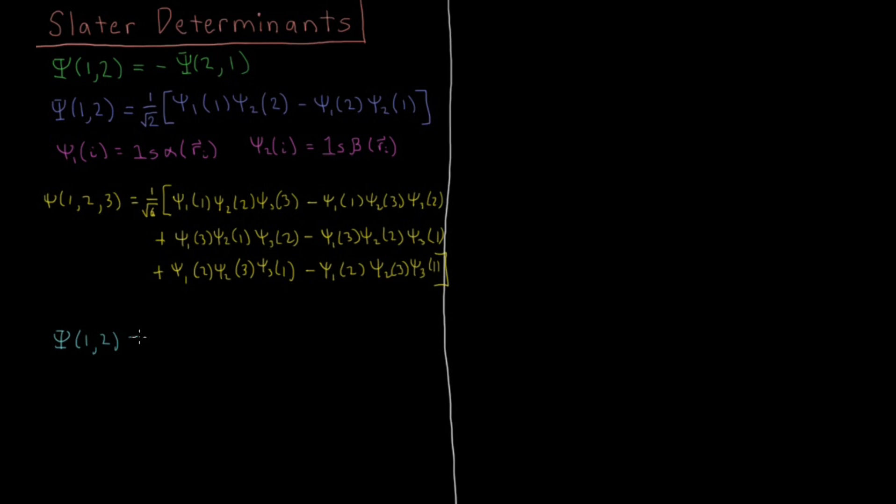For our two-electron case, this type of product here is equivalent to saying 1 over the square root of 2, and then a determinant which looks like this: psi 1 of 1, psi 2 of electron 1, psi 1 of electron 2, psi 2 of electron 2. From the rules of multiplying a 2 by 2 determinant, we would get psi 1 of 1 times psi 2 electron 2, going down this diagonal, then minus, going down the other diagonal, psi 2 of 1 and psi 1 of 2. You could do the same thing for a 3-electron determinant: 1 over square root of 6 out in front and make a 3 by 3 determinant with these orbitals psi 1, psi 2, psi 3 forming the columns, and electrons 1, 2, and 3 forming the rows.